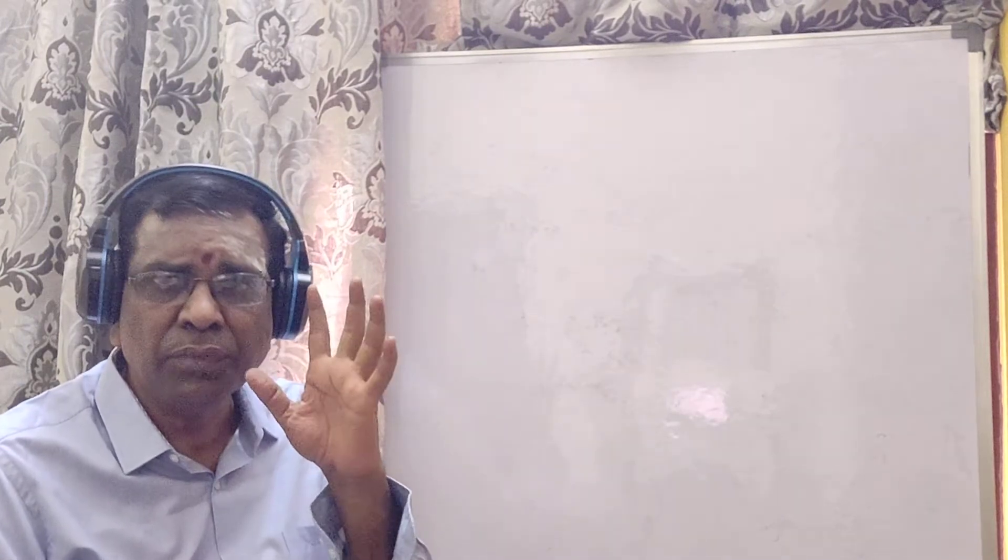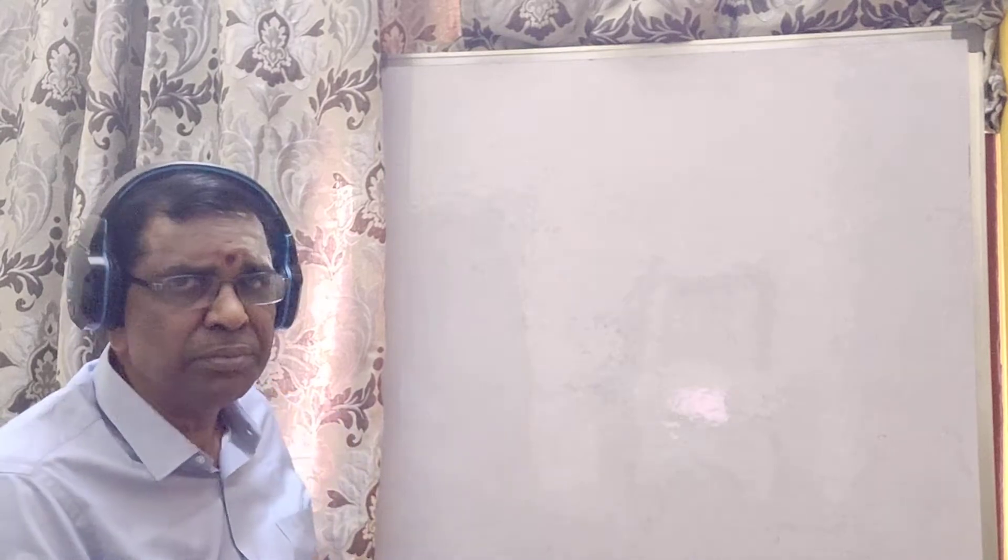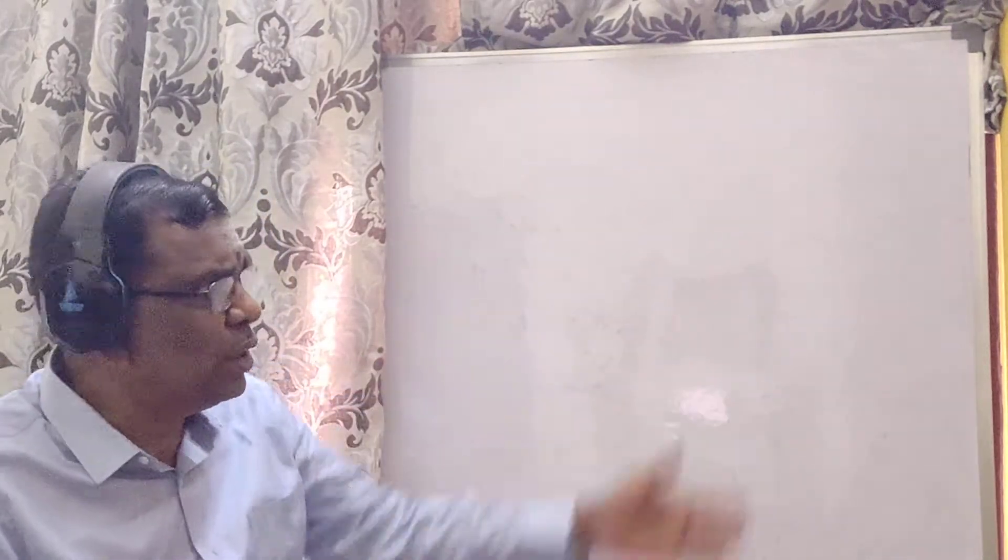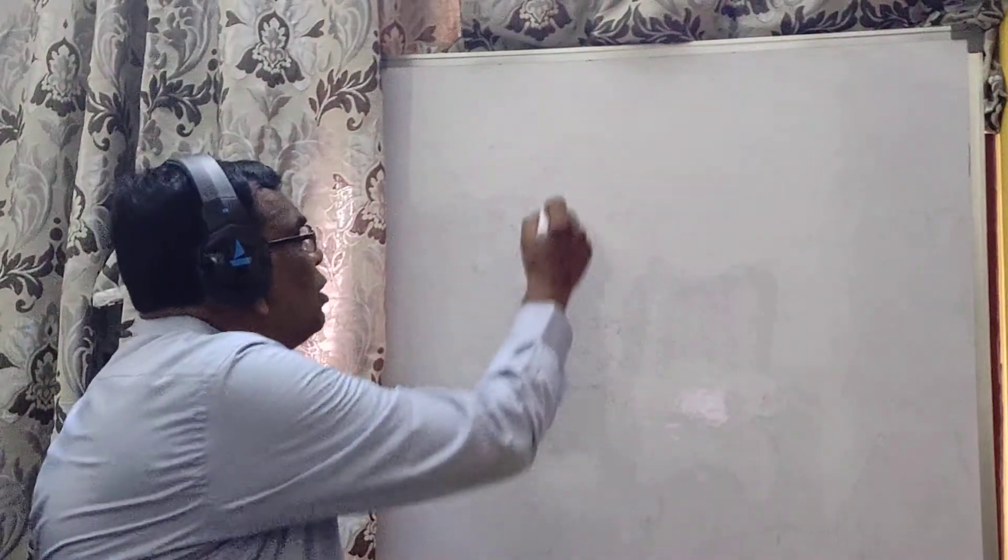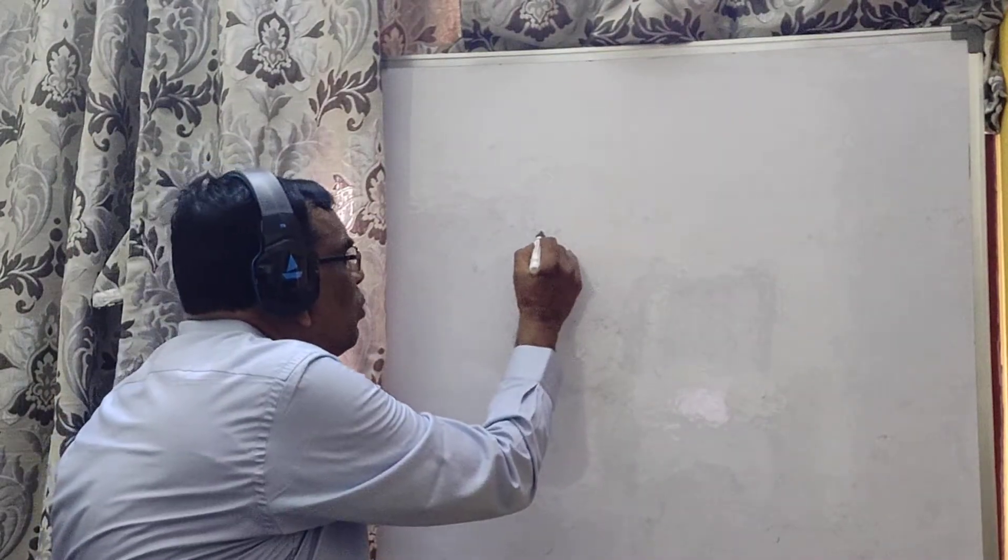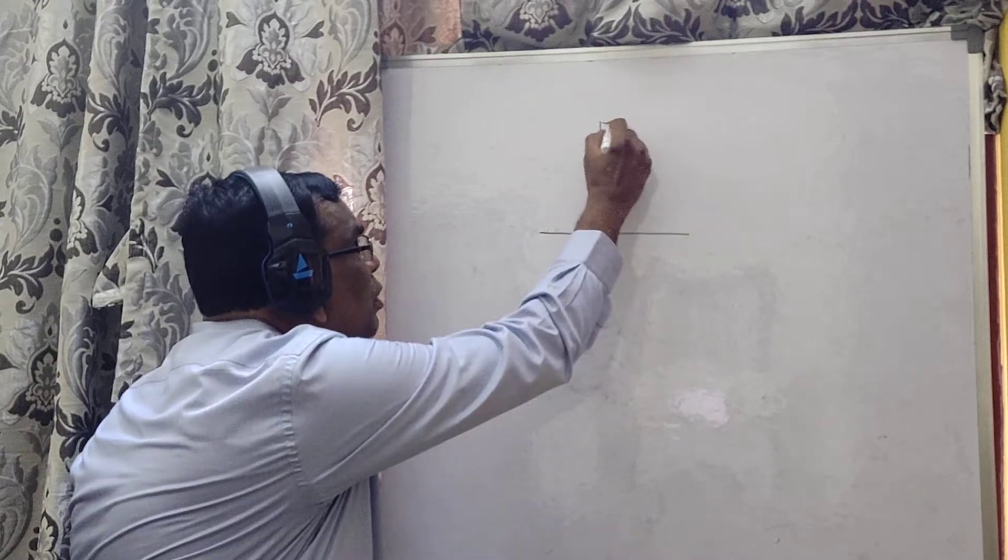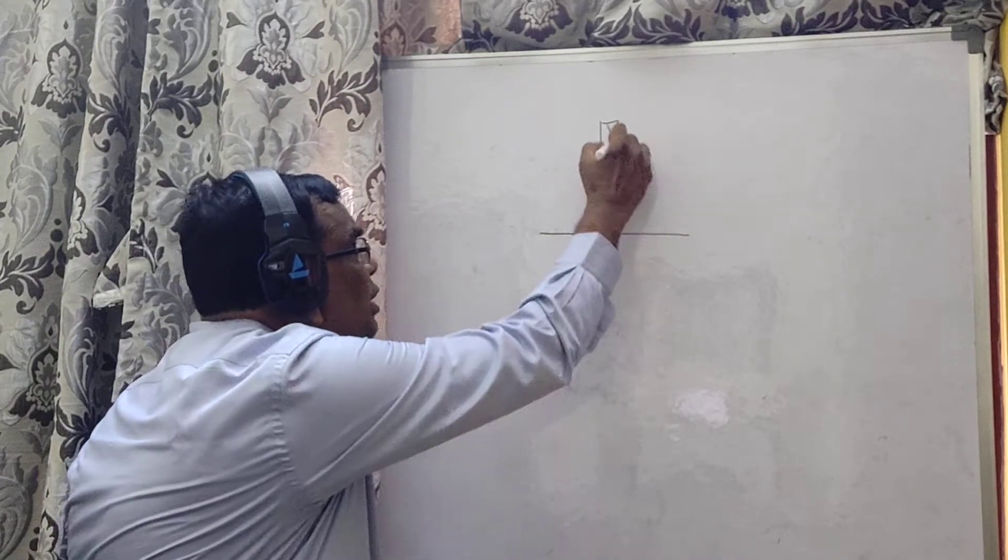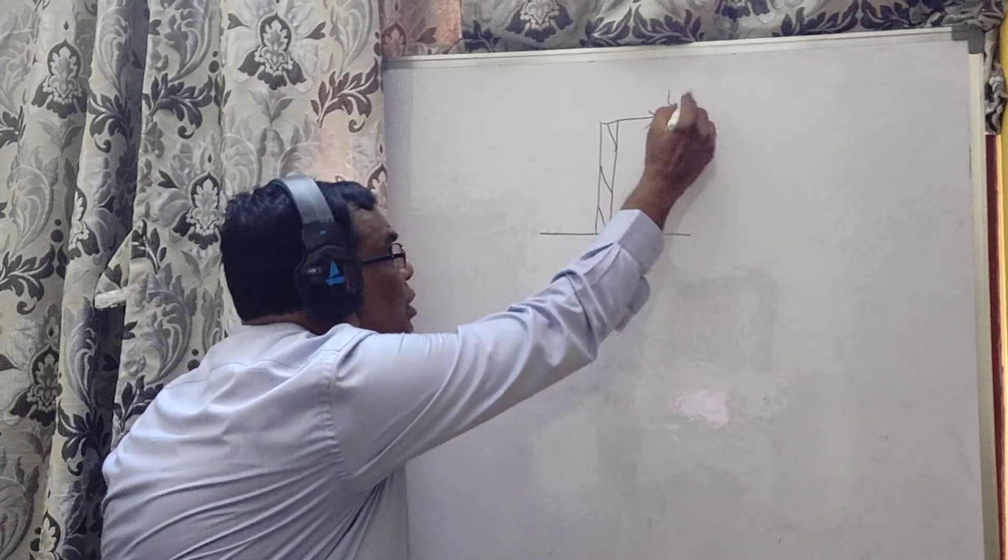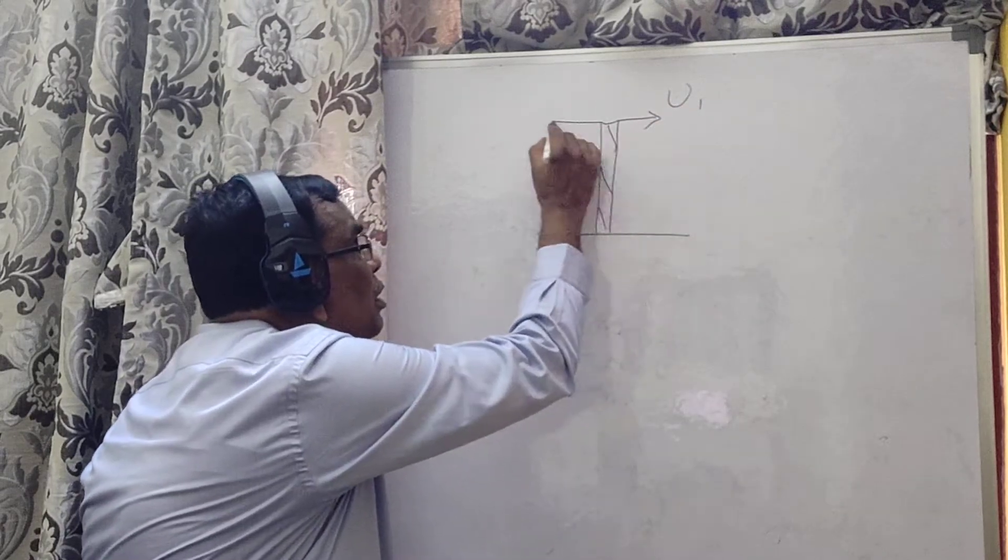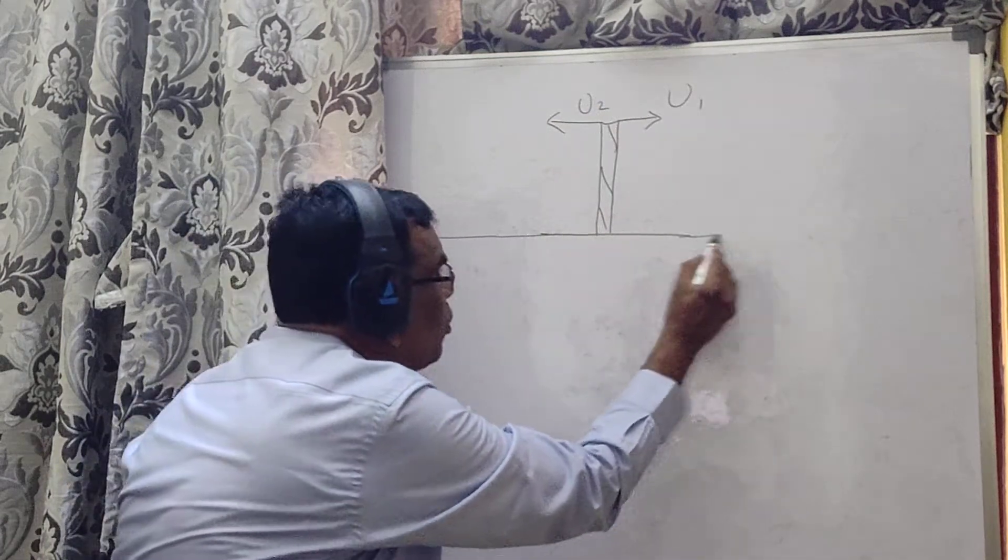We were looking at projectiles, the horizontal projectiles from the top of the tower. I already put vectors, the equation of motion, representing that. But now, I will give you, here you can see, this is a tower.